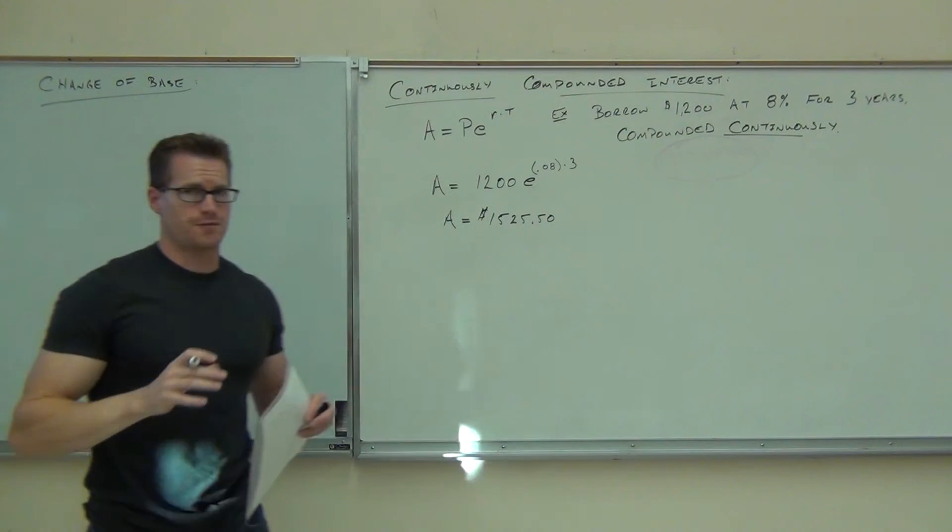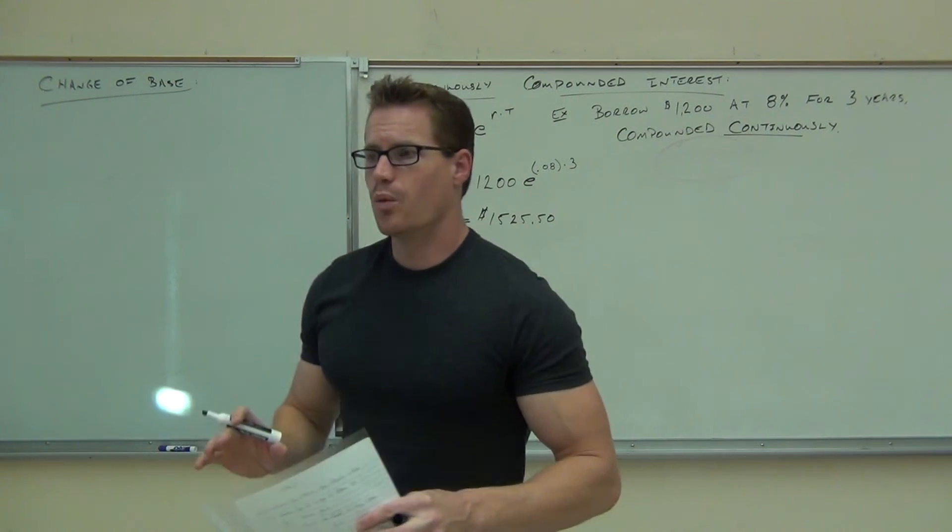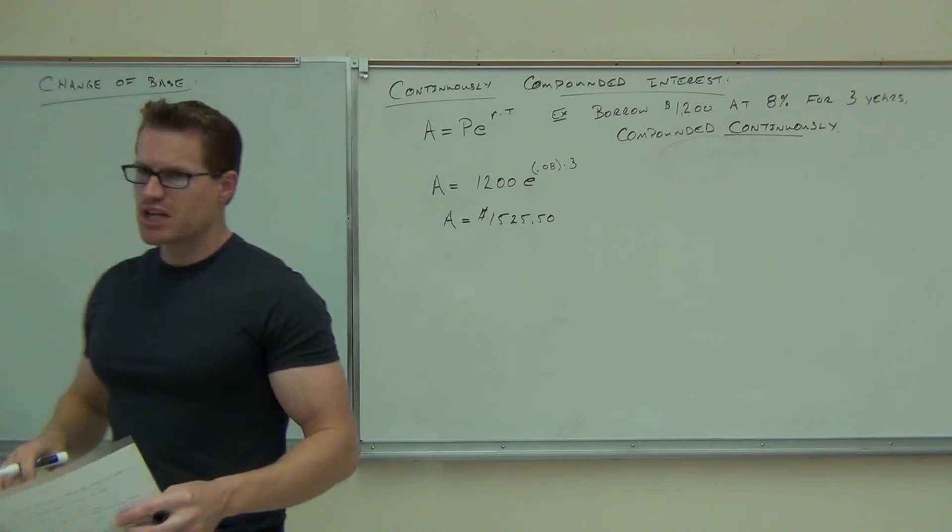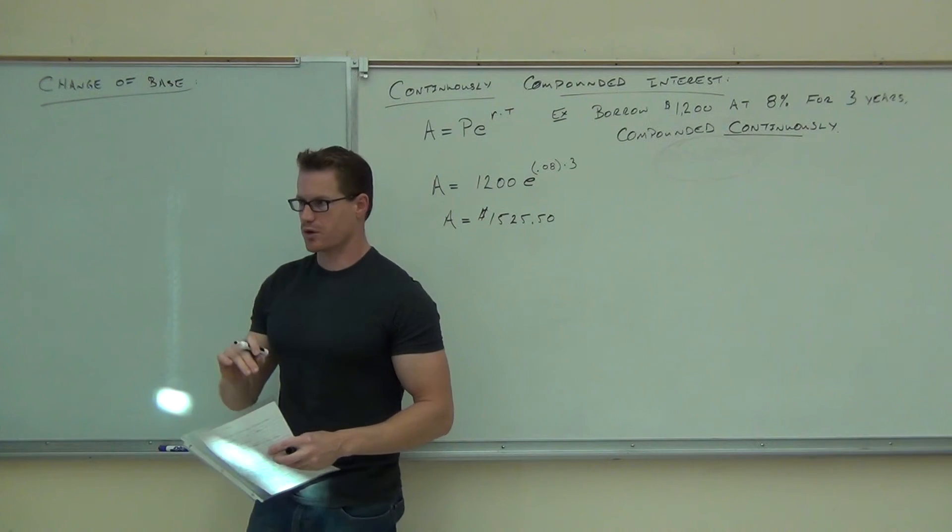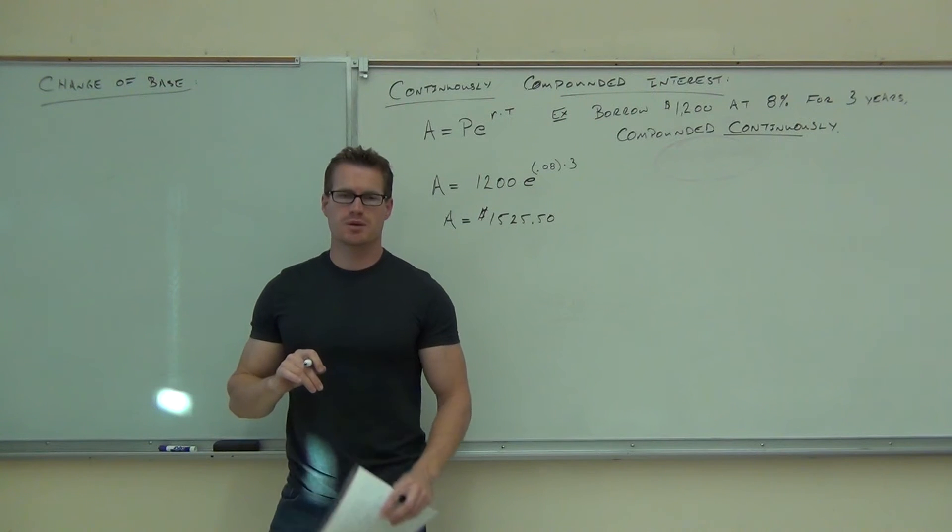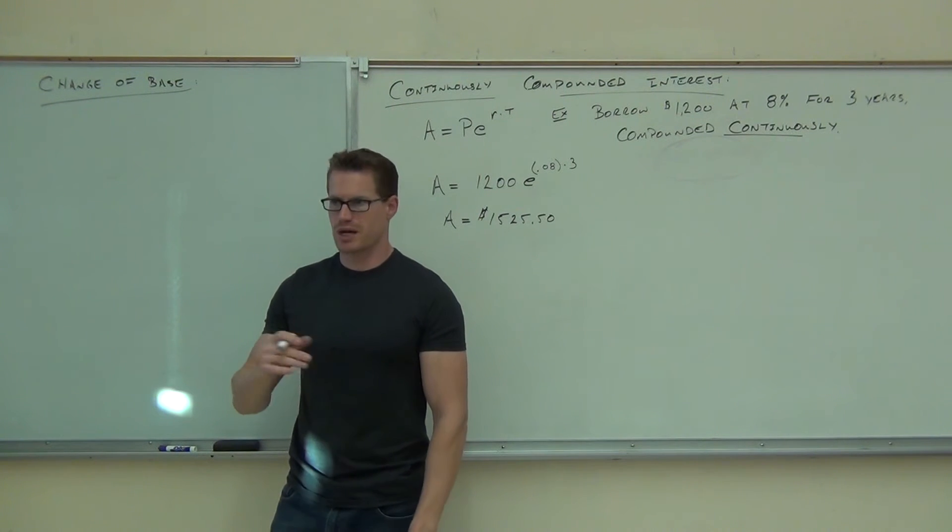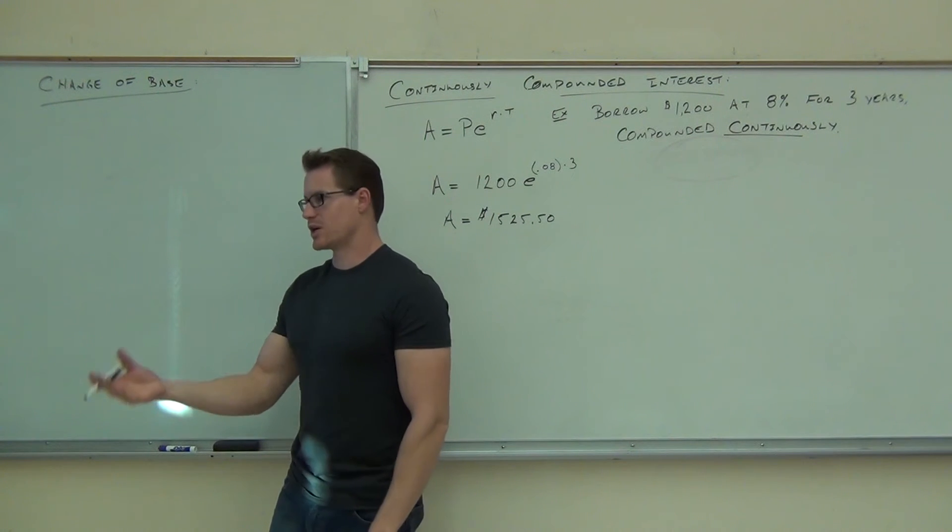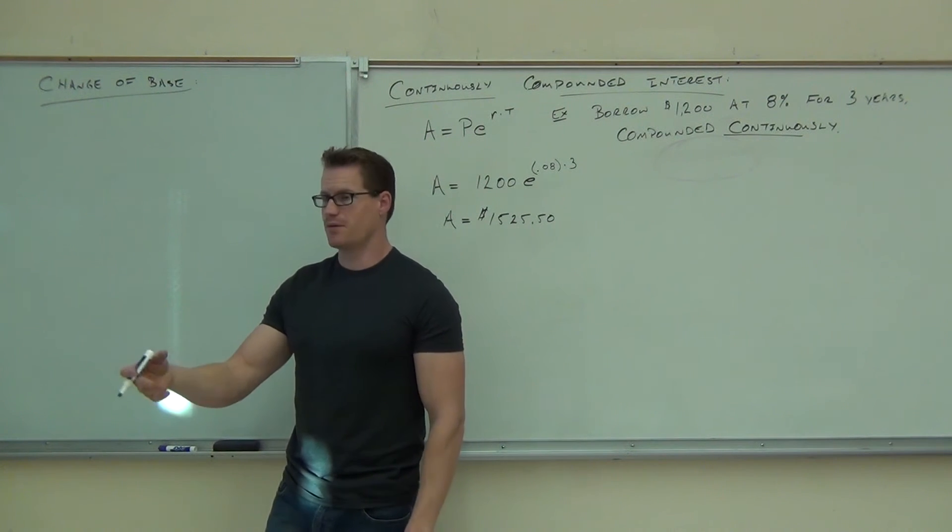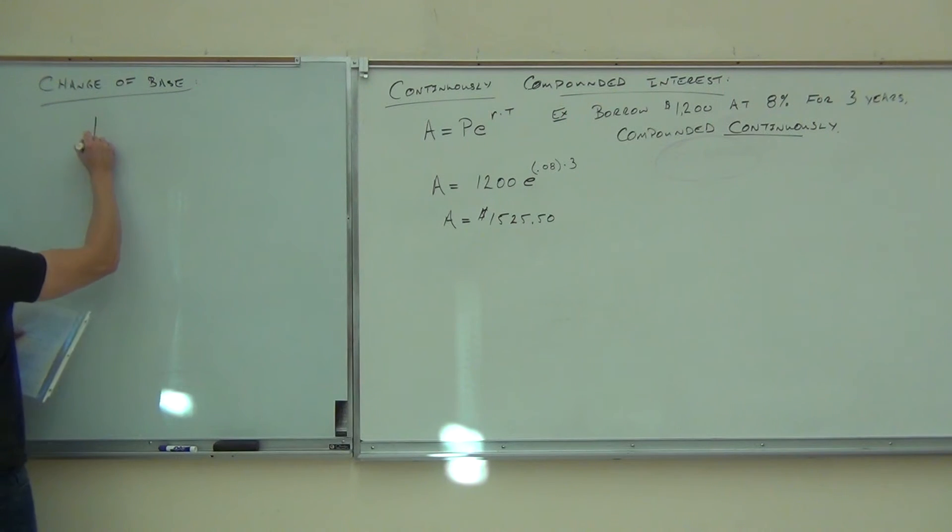Change of base is a very, very easy formula. What this allows you to do is to change between any logarithm of any base into a base that you want to work with. Now, why would you do this? Well, if I ask you this question, can you plug in log base 7 of 5 on your calculator? You're going to go, no. Can you plug in log base 10 of 5? So we can be able to change the logarithms. Or ln of 5. You can change to that. Here's what the change of base formula looks like.